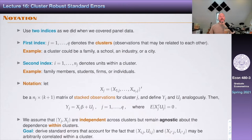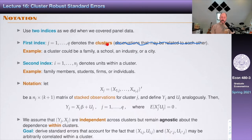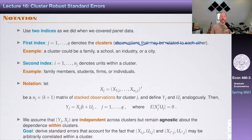The notation uses two indices. The first index J denotes the cluster — a cluster could be a family, a school, an industry, a city, or a state. The second index I denotes units within the cluster — family members, students, firms, individuals. The matrix X_J collects all covariates in cluster J, with NJ observations, giving a matrix of dimension NJ by K+1.